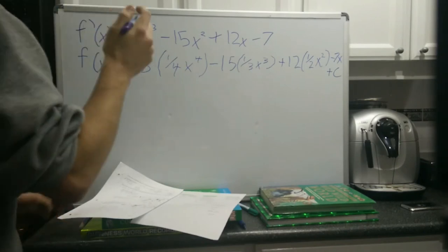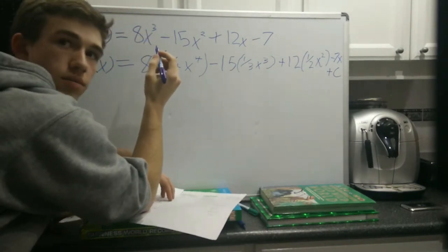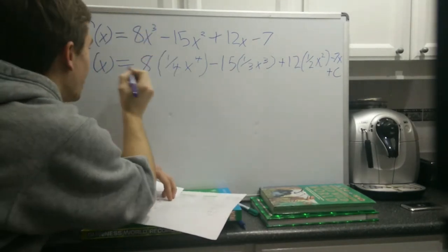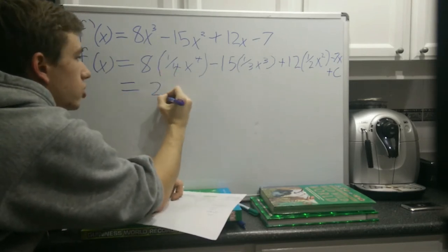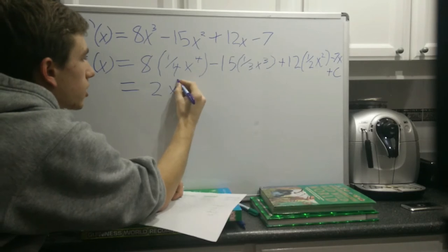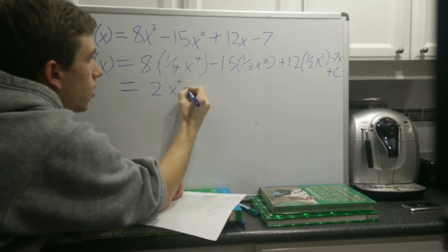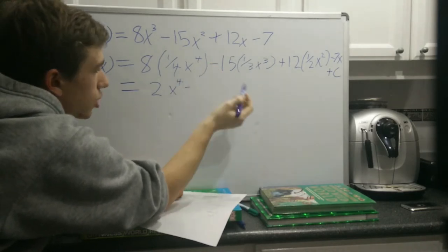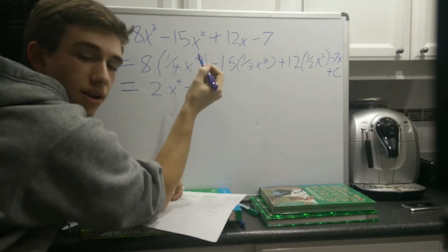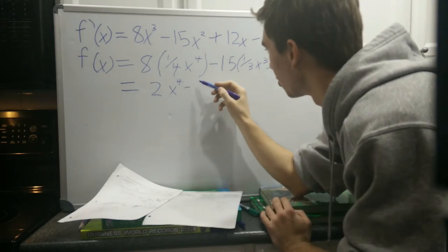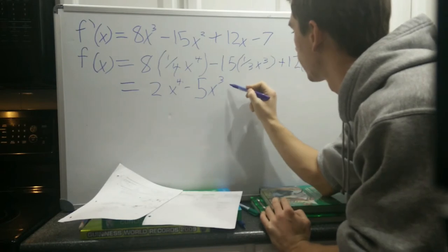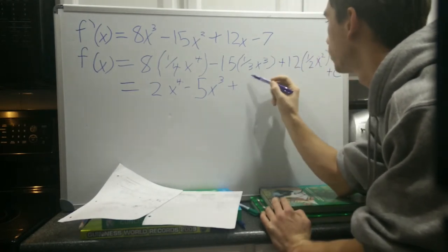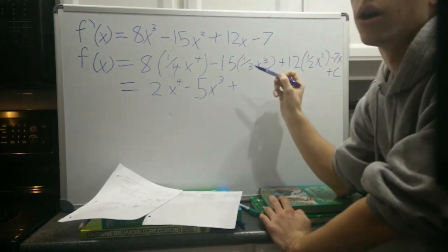All right, so all we have to do after this is simplify. Down to a quarter of 8 is 2 times x to the 4, minus 1 third of 15 is 5, so third of 15.